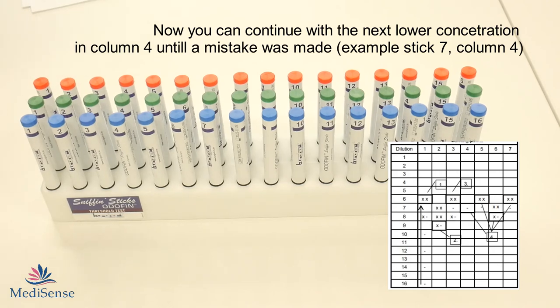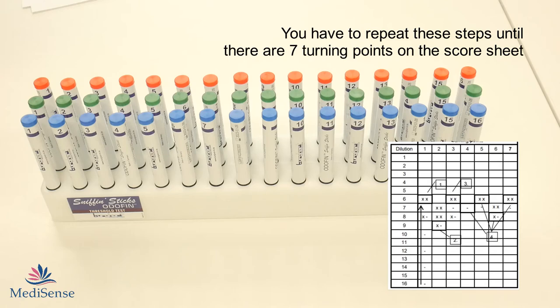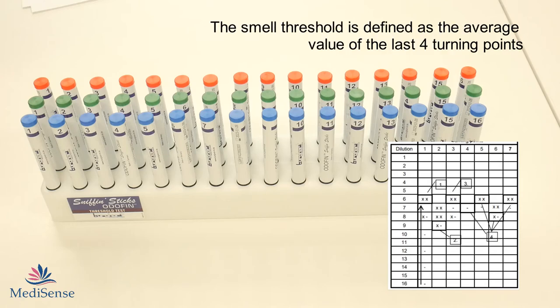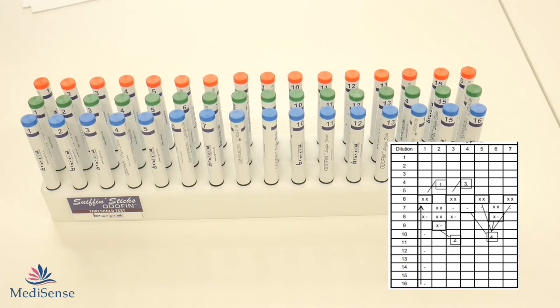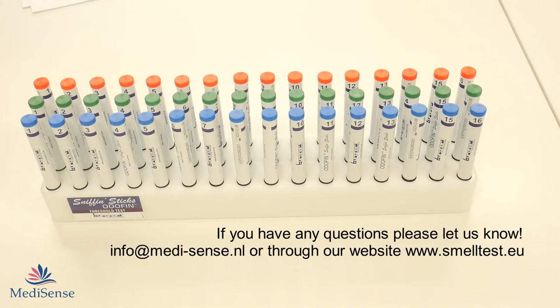The threshold test is finished when you have 7 turning points on your score sheet. When the test is finished you look at the last 4 turning points and you take the average of those 4 turning points which is the score for the threshold test.